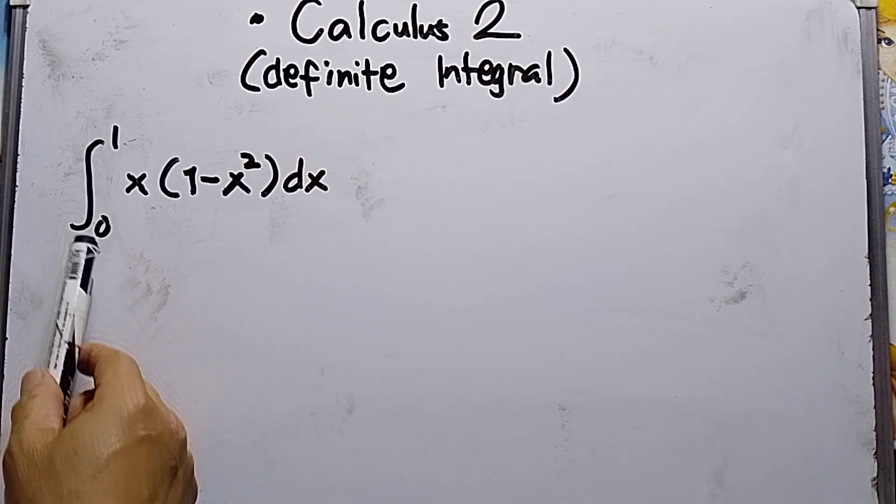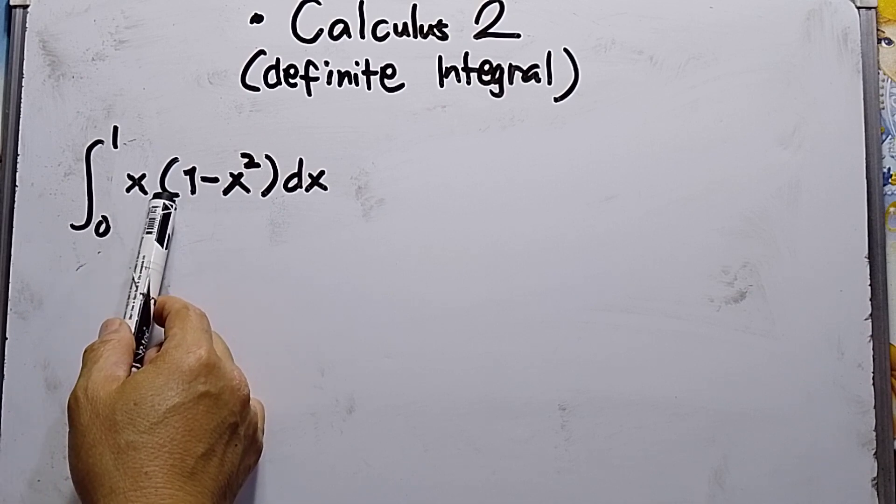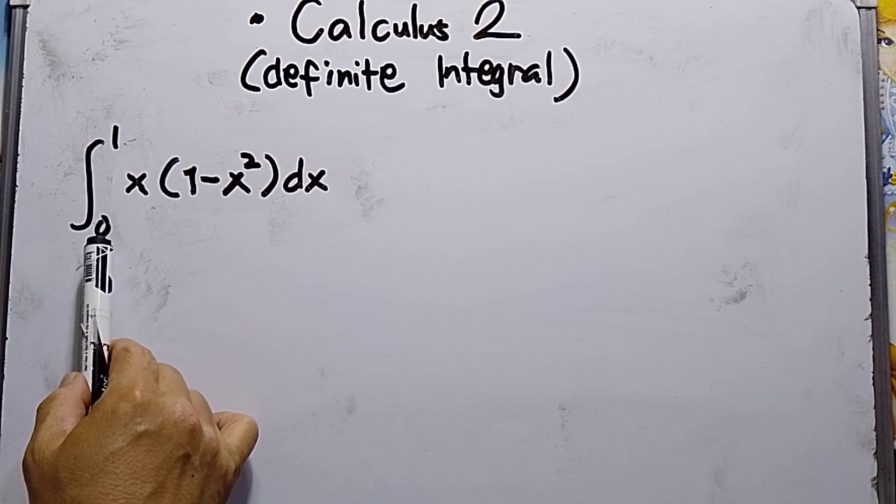We need to evaluate this integral. The function is x times (1 minus x squared) dx, with lower limit 0 and upper limit 1.